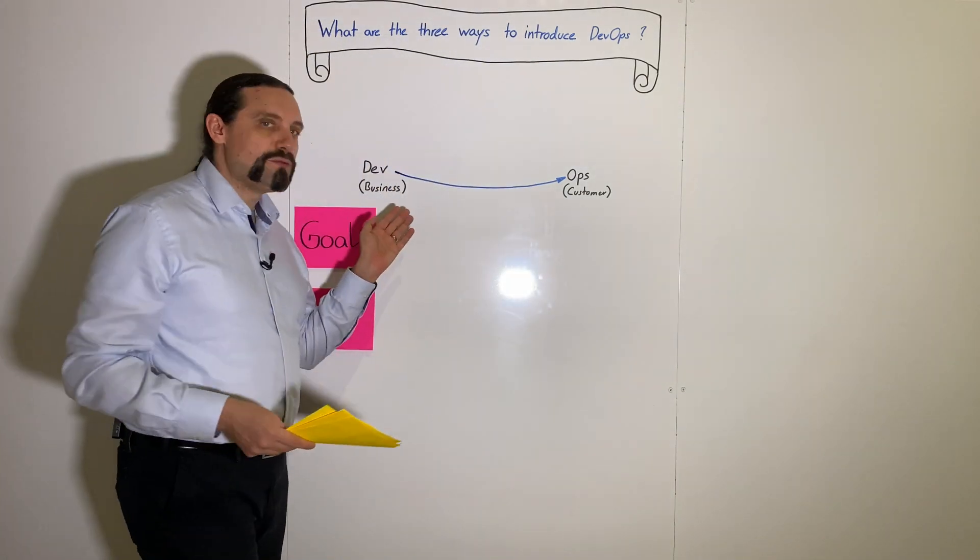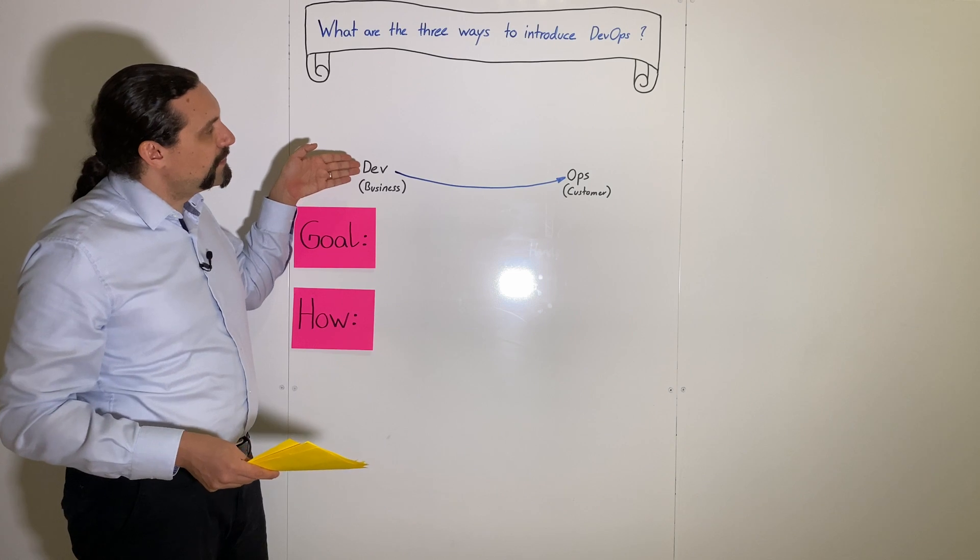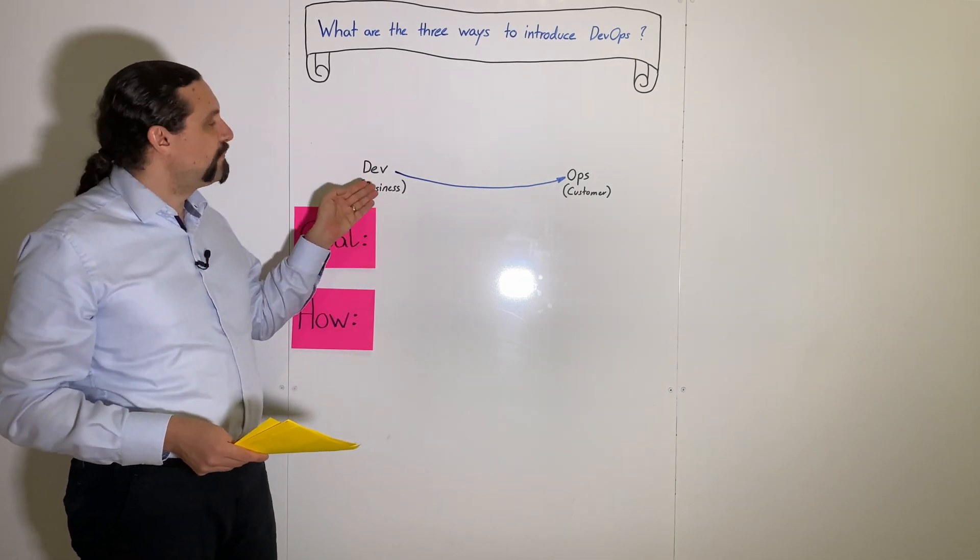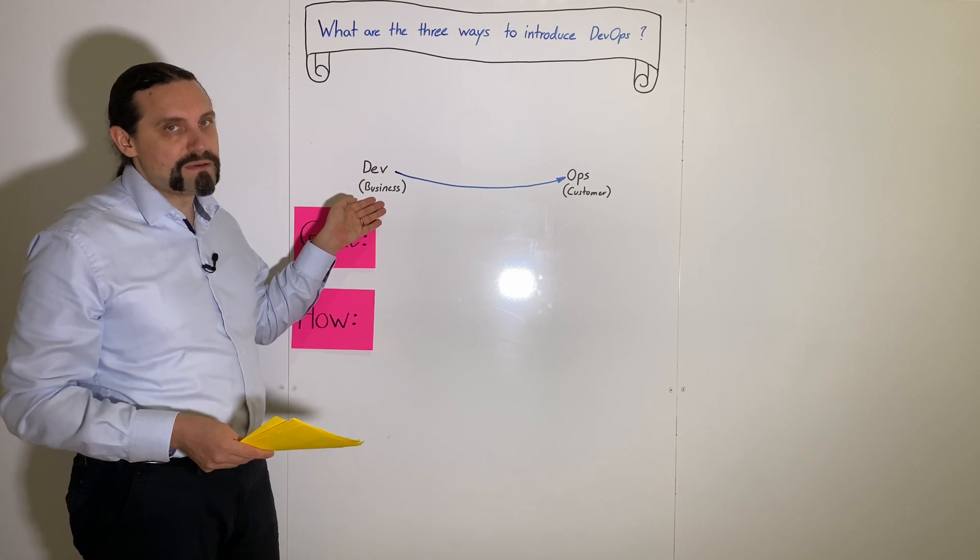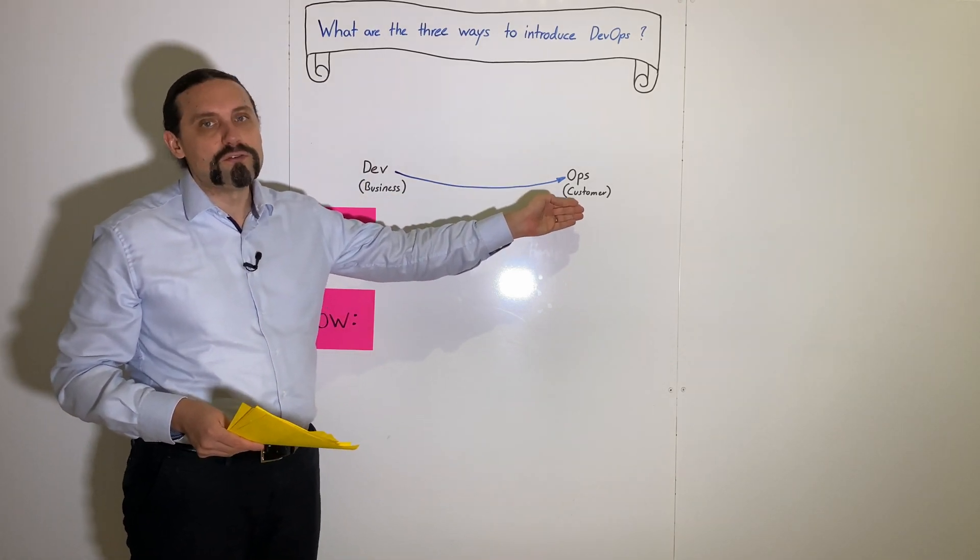The first way to introduce DevOps is the way where we are going to put value as fast as possible from development or from the business into production, to operation, or to the customer.